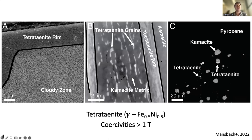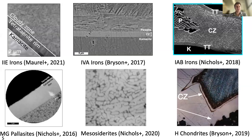Tetrataenite can also form as more individual grains instead of this closely packed wormy texture. In the middle panel I'm showing tetrataenite grains — the white grains — kind of embedded in a chamosite matrix, which is called plessite. We also find this in meteorites. Tetrataenite can also occur as more individual grains embedded in silicates in primitive achondrites — tetrataenite grains embedded in an olivine or pyroxene grain. Tetrataenite has become very useful in the past decade for paleomagnetic studies of mostly iron meteorites and a few chondrites as well.